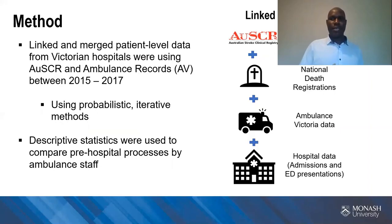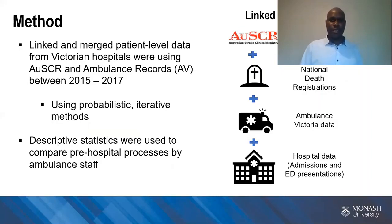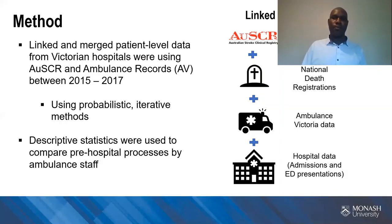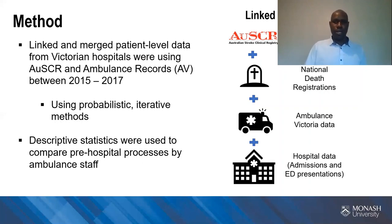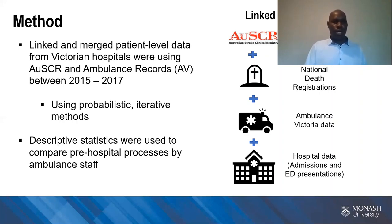For this project, the linked data included data from the Australian Stroke Clinical Registry, the National Death Index, Ambulance Victoria, as well as the Victorian hospital admissions and presentations data. Patient-level data from the OSCA between 2015 and 2017 were provided to the Data Linkage Unit, where these data were linked using probabilistic iterative methods. Using the OSCA as the source of patients with hospital-confirmed stroke or TIA, and by linking this with the ambulance records, we can identify factors that influence pre-hospital and hospital care and determine long-term outcomes.